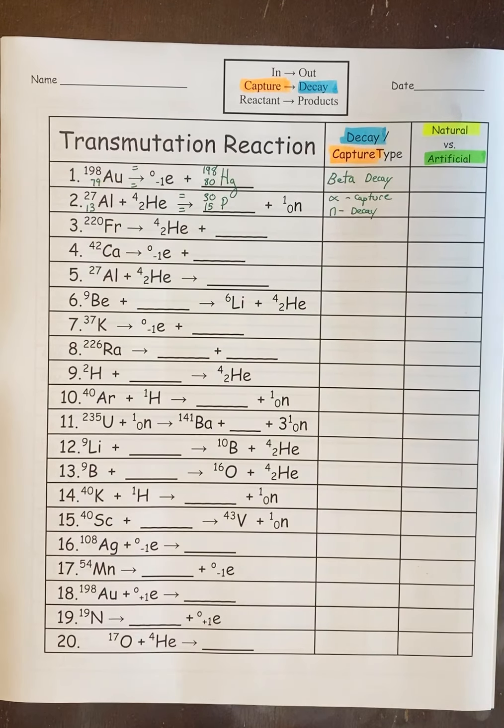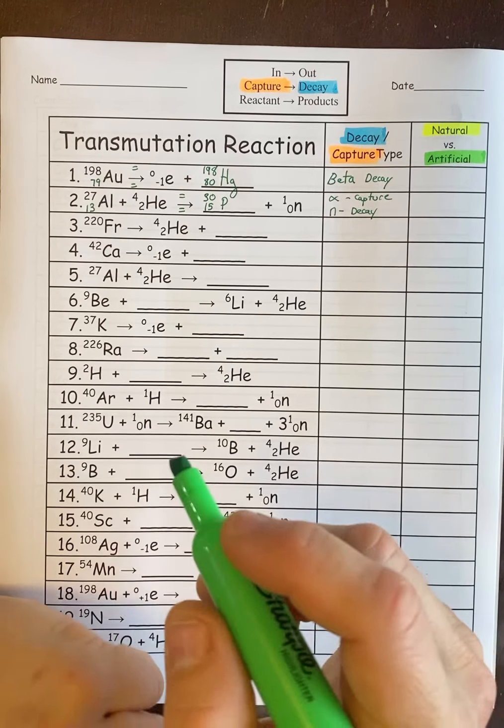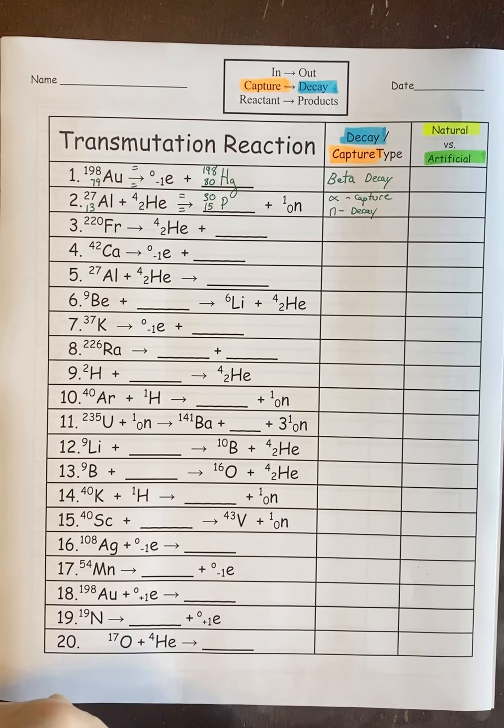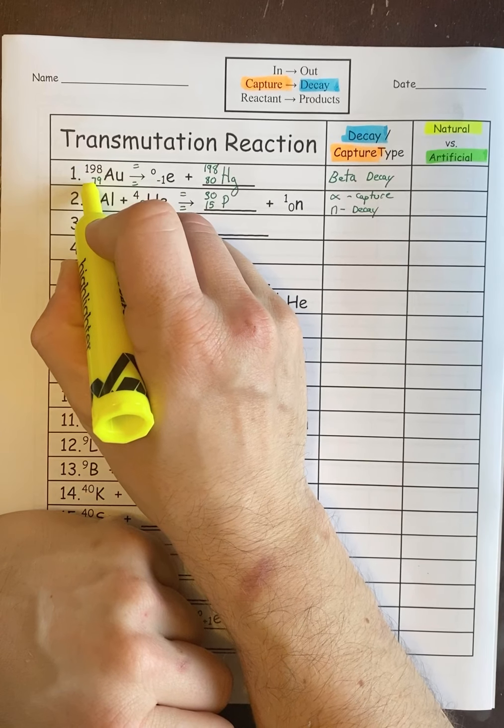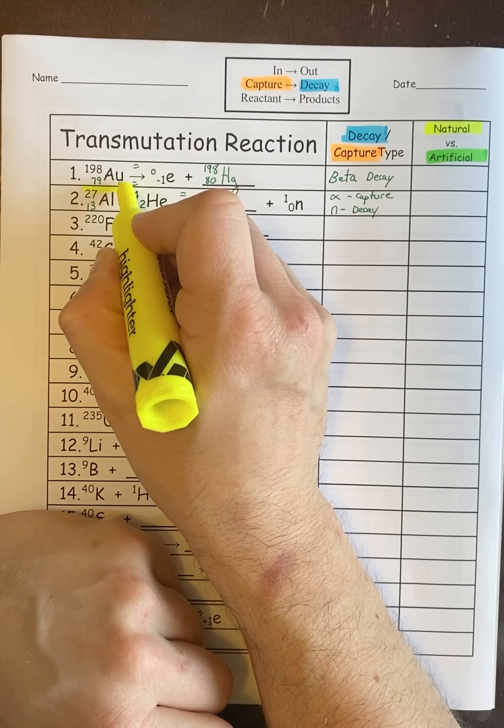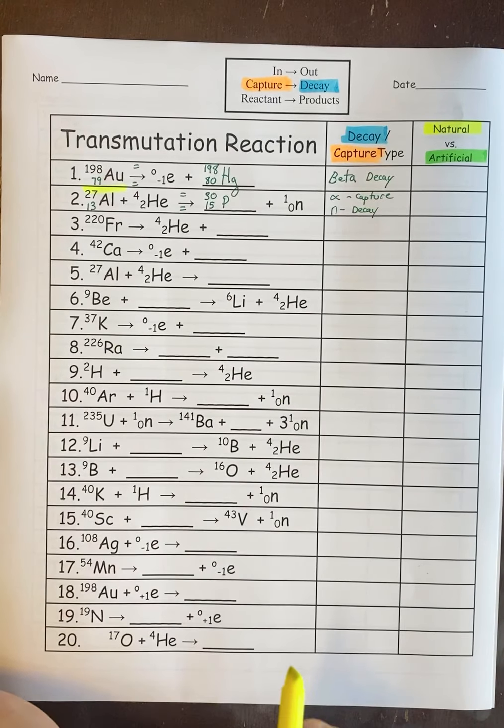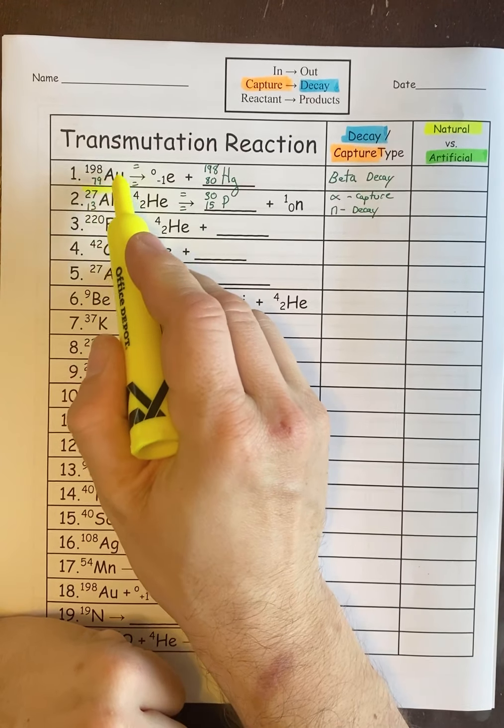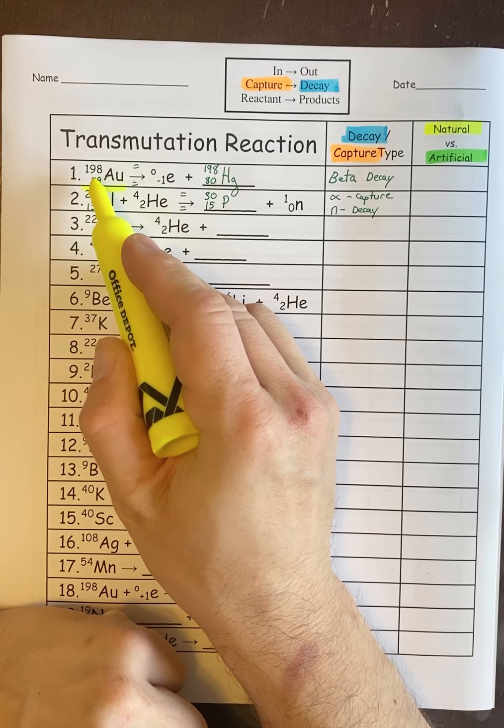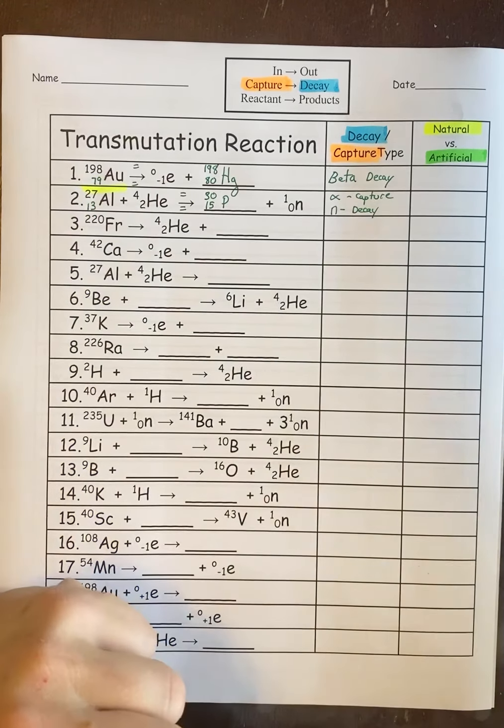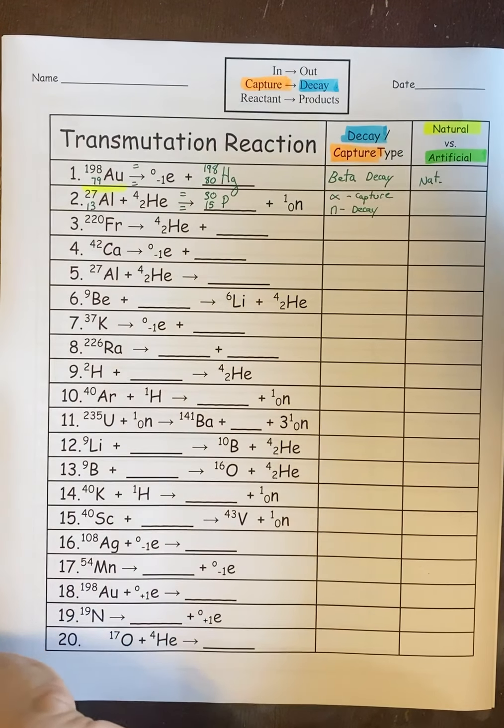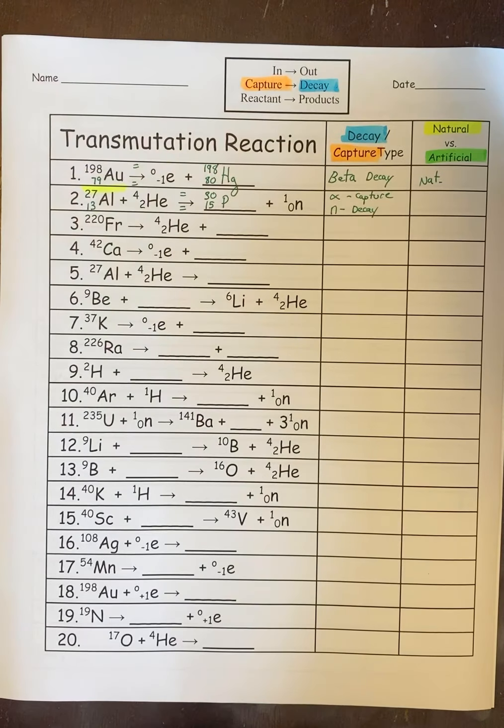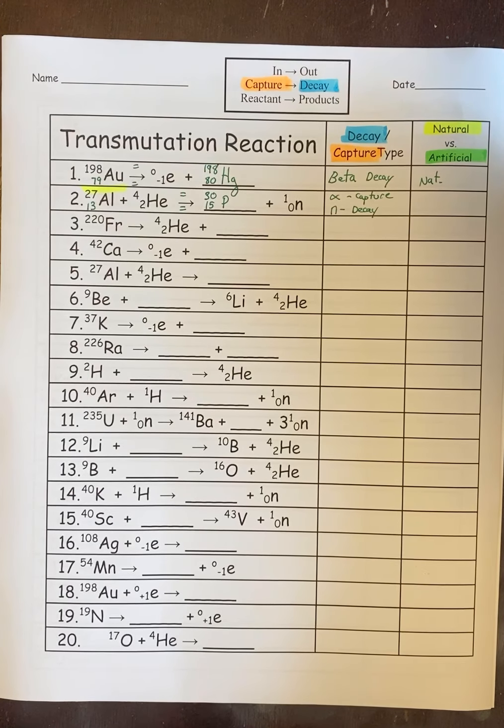Now let's do artificial versus natural. This one's a little bit easier. For a natural transmutation you are going to have one starting material, one thing as you're reacting. Since this is just AU starting that makes it natural because in nature atoms decay on their own without any additional help. So that's why natural decays always have one element on the left of the arrow.